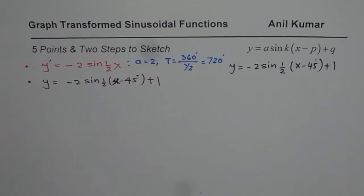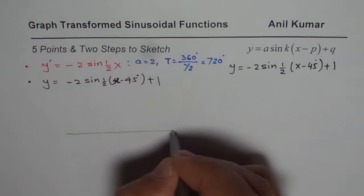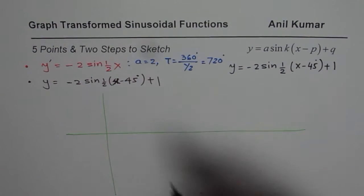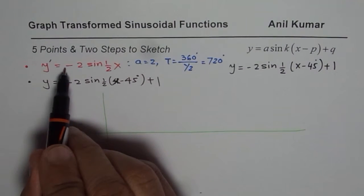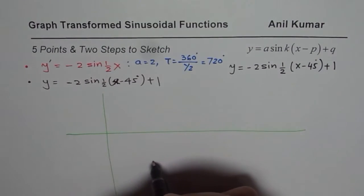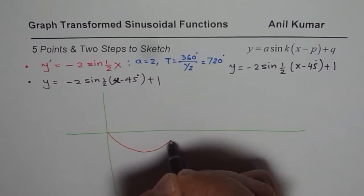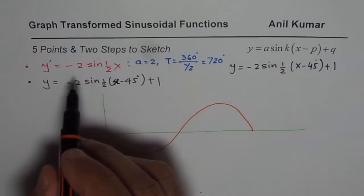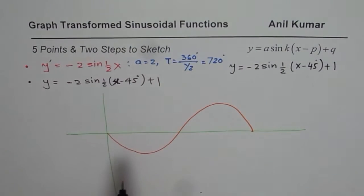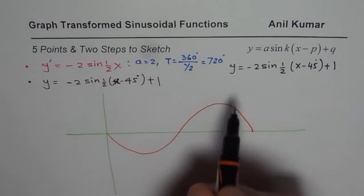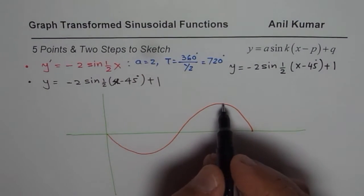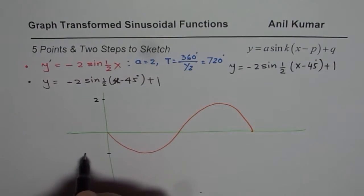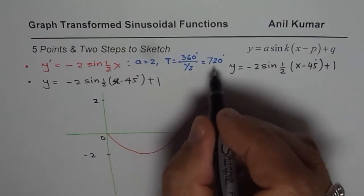So we have a sine function whose time period is 720 degrees. Let's make a big graph here. Let's say that is the coordinate axis. And the graph, since it is negative, starts moving downwards first and then upwards, so we can have a graph which is kind of like this. So that is one wave of -2 sin half x. The amplitude for this particular sine wave is 2, so the maximum will be 2, minimum will be -2, time period is 720.